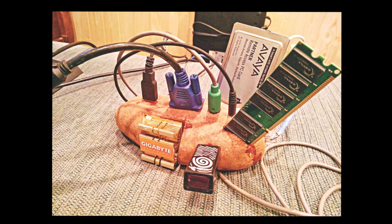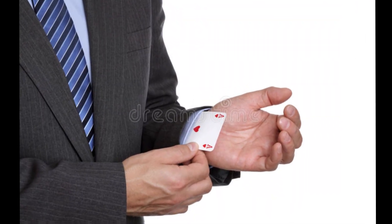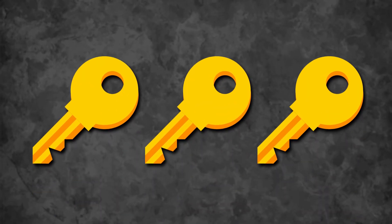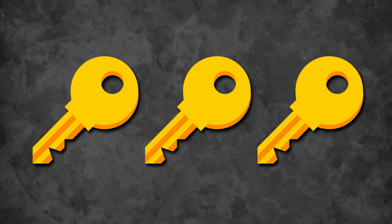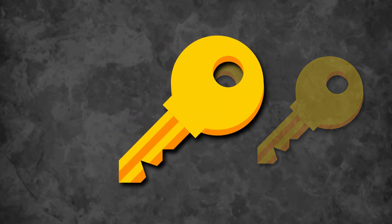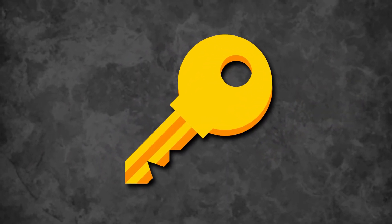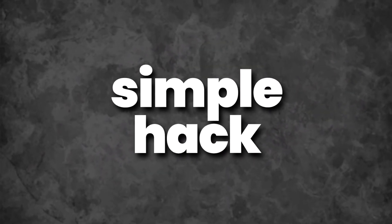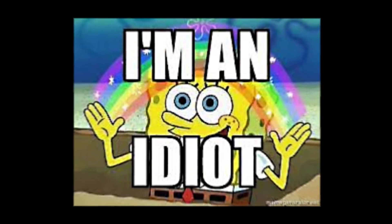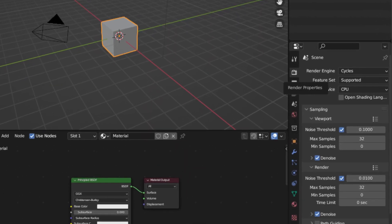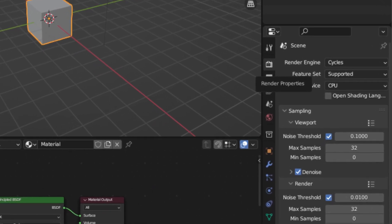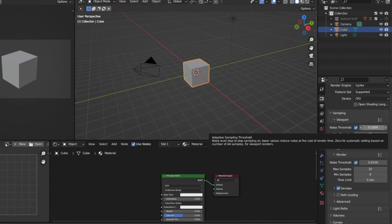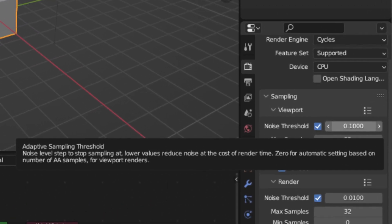How have I been able to do all this on such a slow computer? I actually have a trick up my sleeve — three essential secrets that I've used to catapult my Blender career by speeding up my computer. I'm going to get straight into the first of those secrets. It's actually such a simple hack that when I found out about it, I felt like an absolute idiot for not knowing about it earlier. That secret is a single property found in the Render Properties tab: the Noise Threshold Slider.